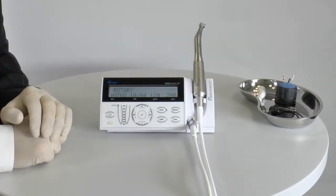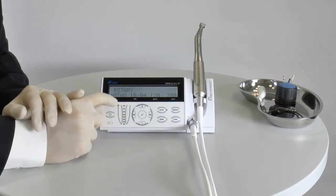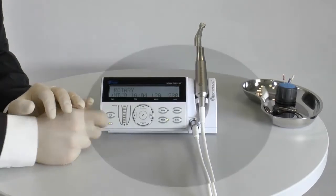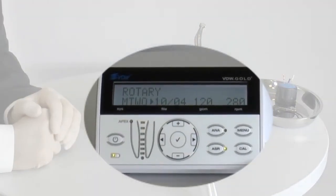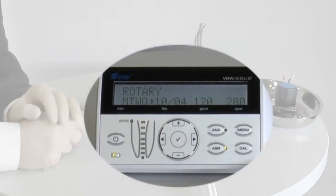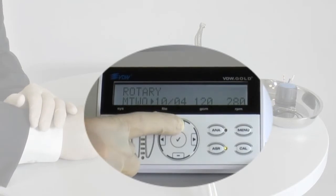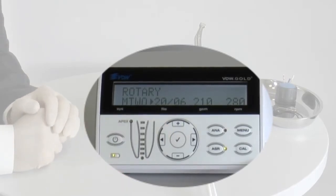If you have pre-selected a rotary file system, press the right arrow key to select the file size inserted in your contra angle. The motor then uses the correct torque value for each file size. This is important to ensure safe use of rotary file systems.